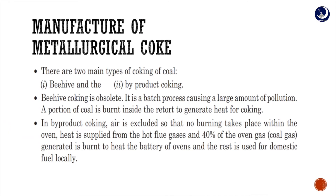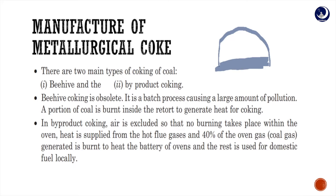For the manufacture of metallurgical coke, two types of ovens are mainly used: the beehive coke oven process and the Otto Hoffman byproduct method. The beehive process uses a dome-shaped structure where coal is charged from a door at the top, heated, and gases are released. However, these released gases cause a large amount of pollution.